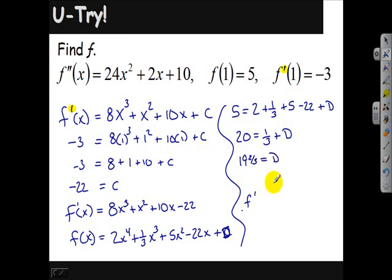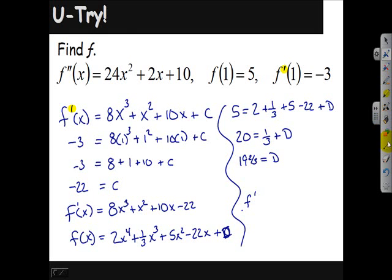So we're looking for f, just plain old f here. f of x is equal to 2x to the fourth plus 1 third x cubed plus 5x squared minus 22x plus, I ran out of room here, 19 and 2 thirds. That's our final answer right there.